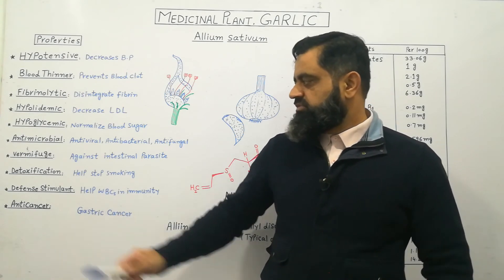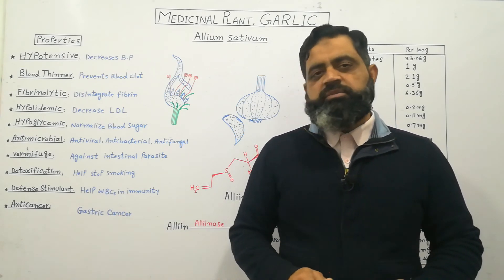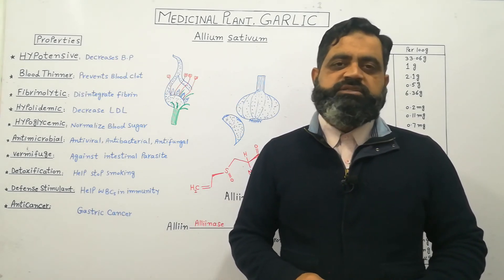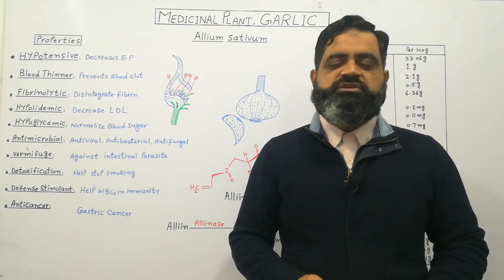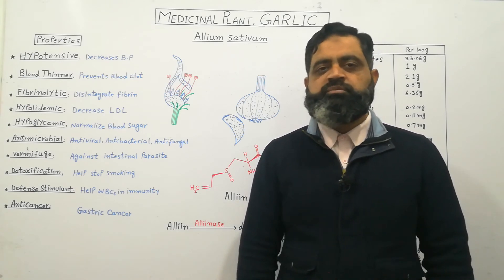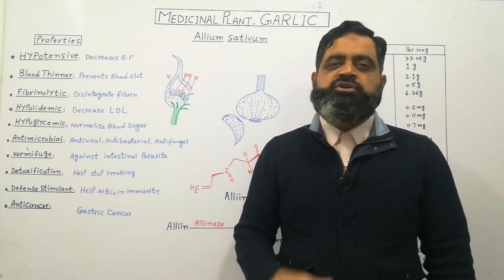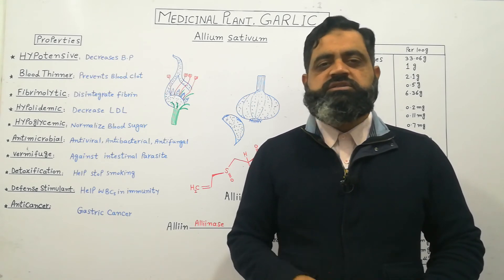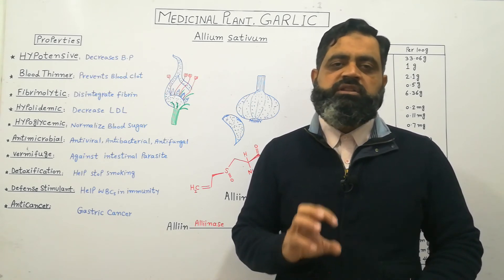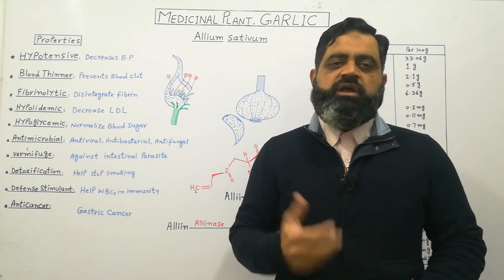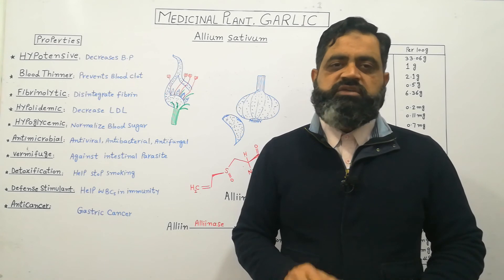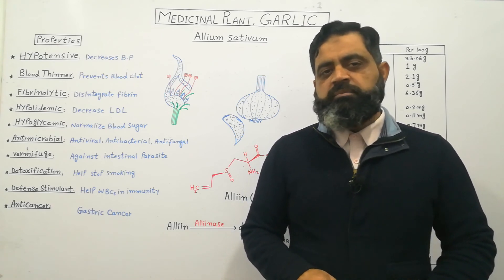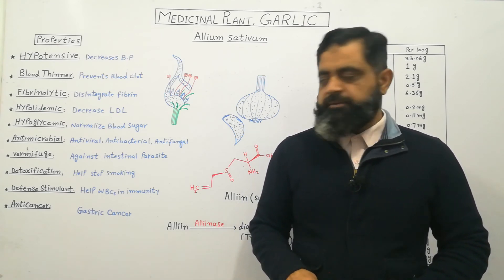Garlic also acts as an immune stimulant because it stimulates our white blood cells, leukocytes, which are very important components of our immune system. So when they are stimulated, our immunity increases and in this way our body is better defended against different kinds of diseases.